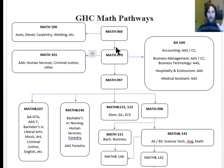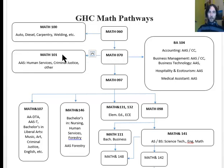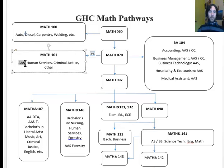Math 60 also leads to Math 70 Beginning Algebra. Math 70 leads to either Math 101, which is a Vocational Technical Math class, or BA 104, which is Math for Business. Math 101 will count for an Associate of Applied Science in Human Services, Criminal Justice, and others.